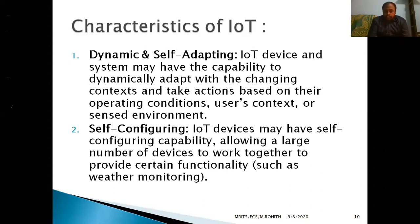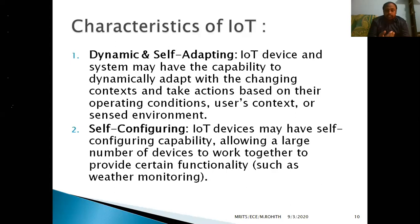The IoT device and system may have the ability to dynamically adapt with the change of context. The context means the environment, the user instructions, or the application. In some cases the environment changes dynamically, so the IoT device has to change and adapt to that situation. In other cases, the user gives instructions to the IoT device, and it has to adapt to those dynamically.